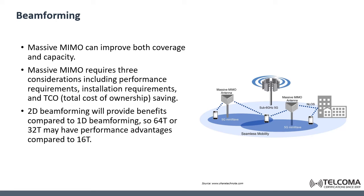Using higher-dimensional beamforming techniques adds more benefits. For example, 2D beamforming provides more benefits compared to 1D beamforming, and therefore 64 or 32 transceiver configurations may have a performance advantage compared to 16 transceivers. Ultimately, massive MIMO and beamforming are major concepts for 5G new radio, enabling the use of millimeter wave frequency bands and enabling operators to generate revenue from 5G use cases.